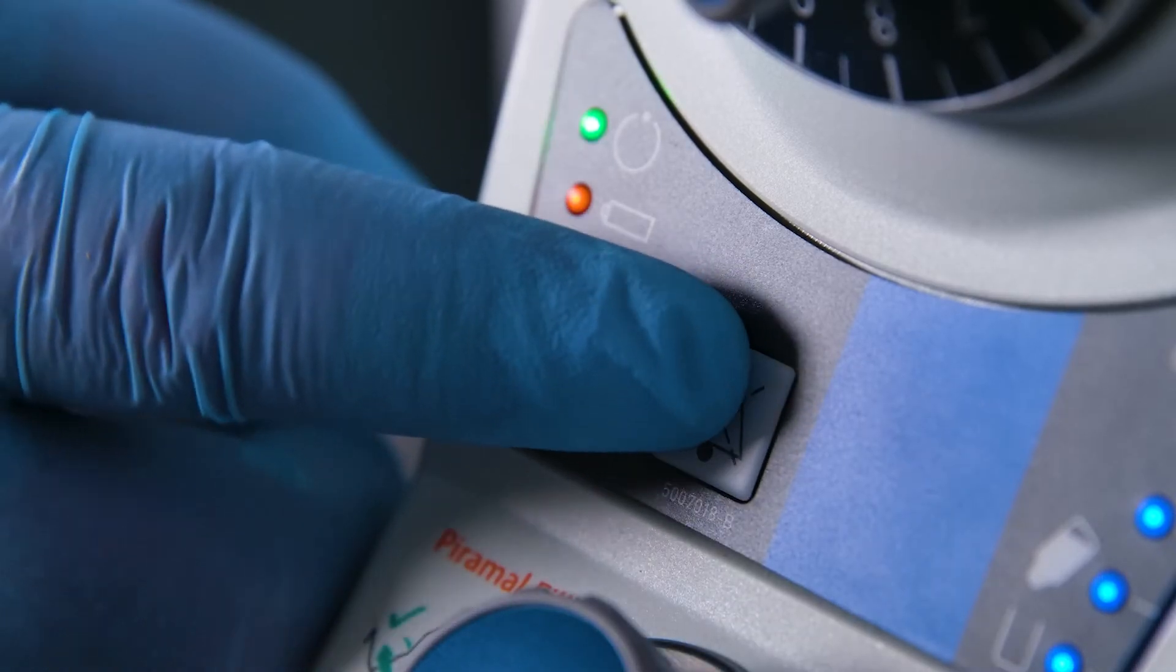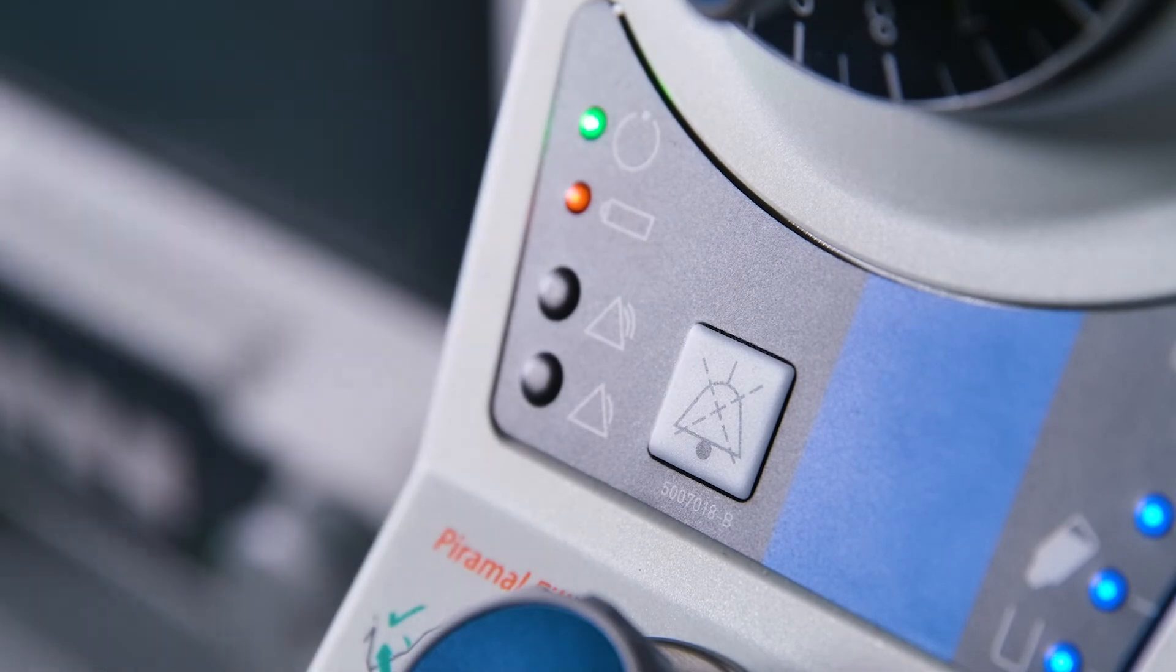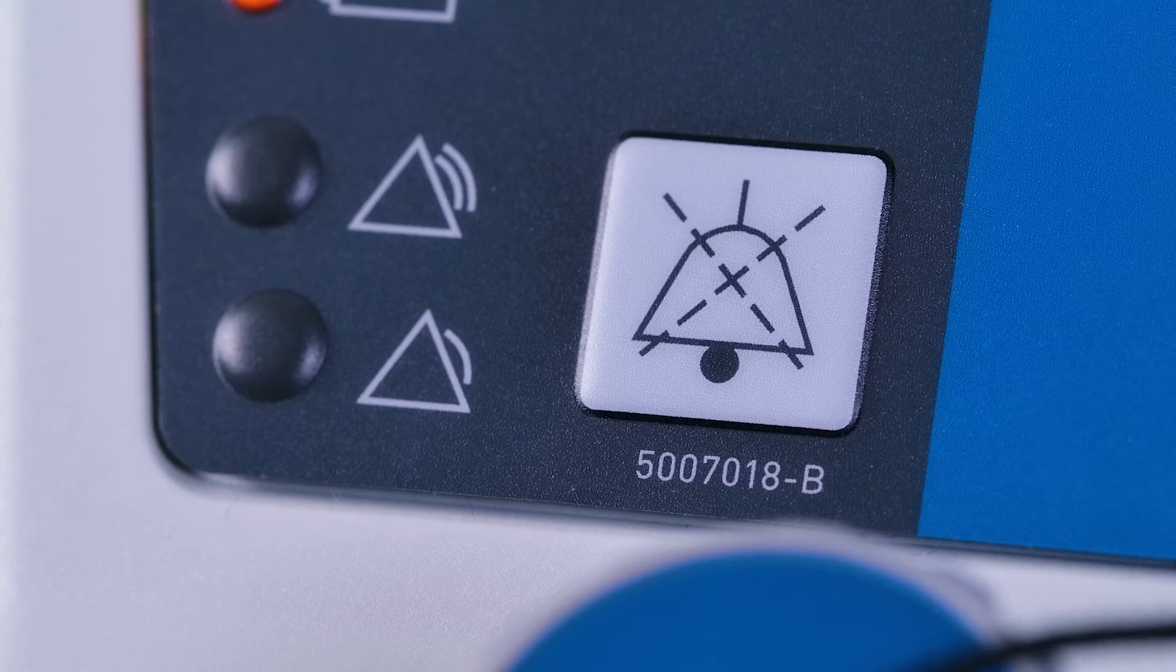Using the alarm mute control: Press the audible alarm mute control. The audible alarm will be silenced for 2 minutes. Press the control again to cancel the silence command.